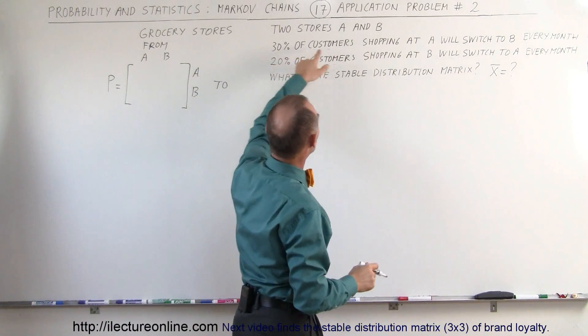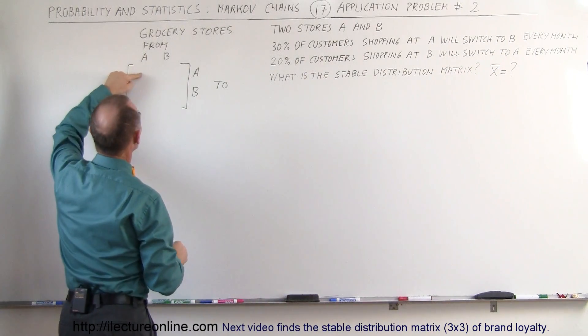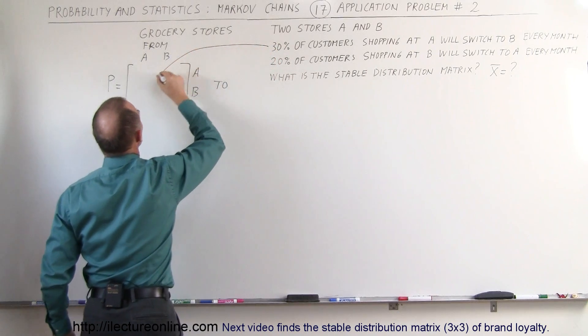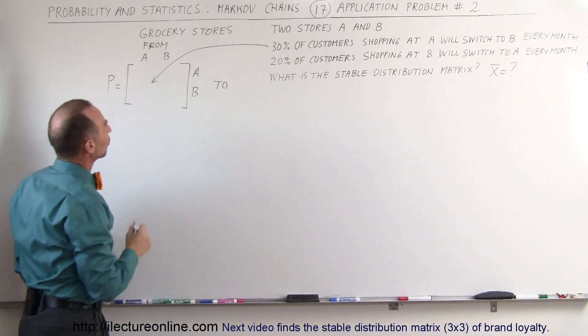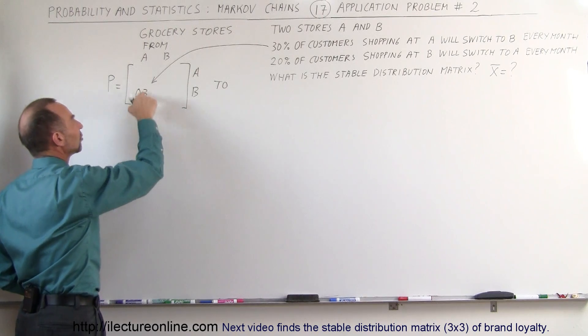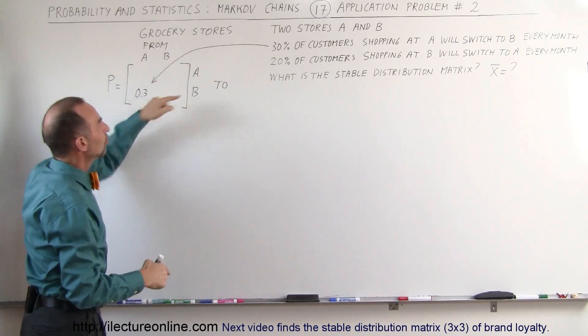From A, because 30% of customers shopping at A will switch to B, so from A to B which is this point right here. This goes right to this part of the matrix, so that would be 0.3 because 30% of the customers currently going to A will be going to B.